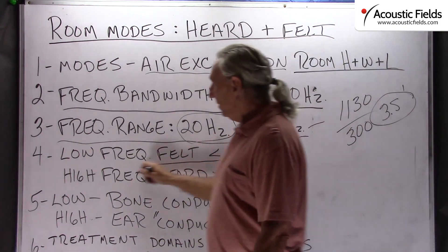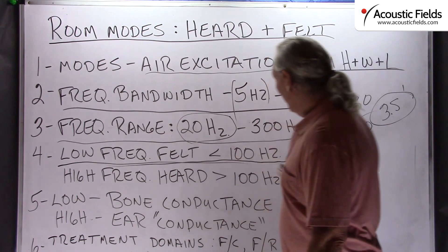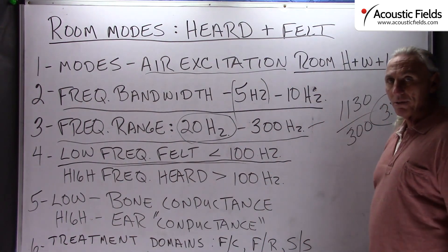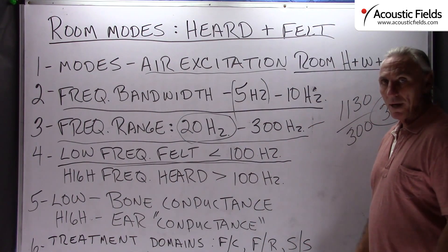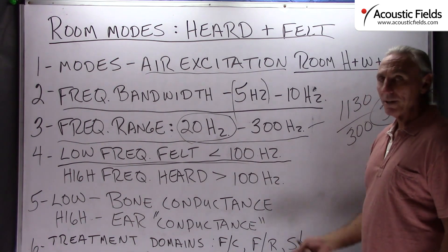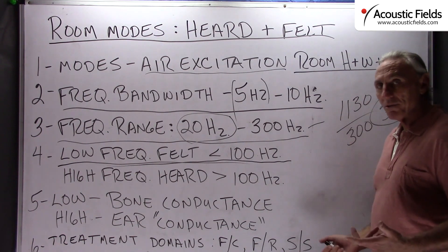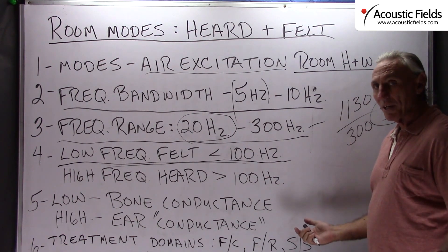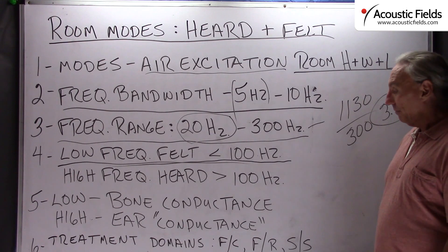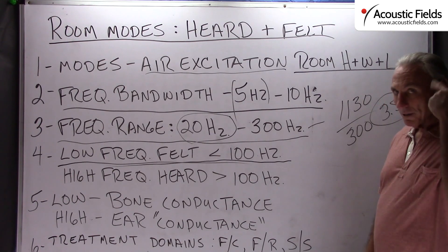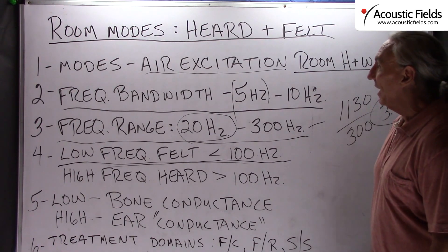Low frequency is felt, and higher frequency above a hundred cycles is heard. Bone conductance is the methodology we use with low frequencies — our skeletal systems are actually our ears for those frequencies. We use our ears to hear the higher frequencies because our antenna or structure is more conducive to that.